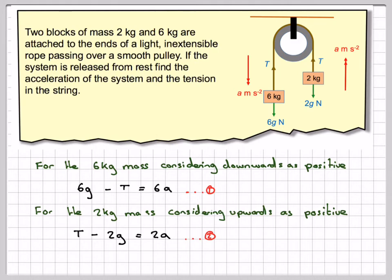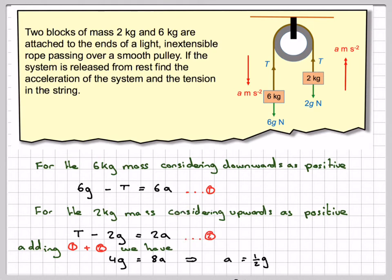Very simple simultaneous equations to solve — all we do is add them. The T's cancel out, and 6g minus 2g gives 4g on one side, and 6a plus 2a gives 8a on the other. That gives a equals one half of g, so a half times 9.8, which is 4.9 metres per second squared.